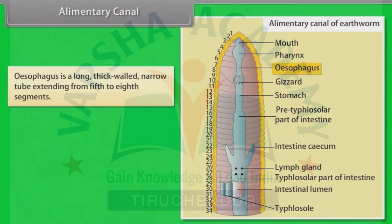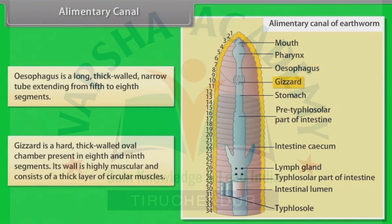The oesophagus is a long, thick-walled narrow tube extending from the fifth to eighth segments. The gizzard is a hard, thick-walled oval chamber present in the eighth and ninth segments. Its wall is highly muscular and consists of a thick layer of circular muscles.